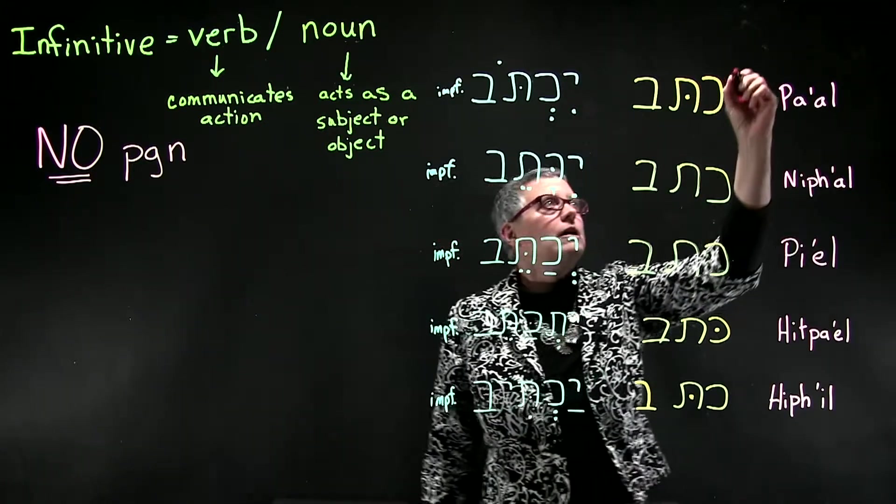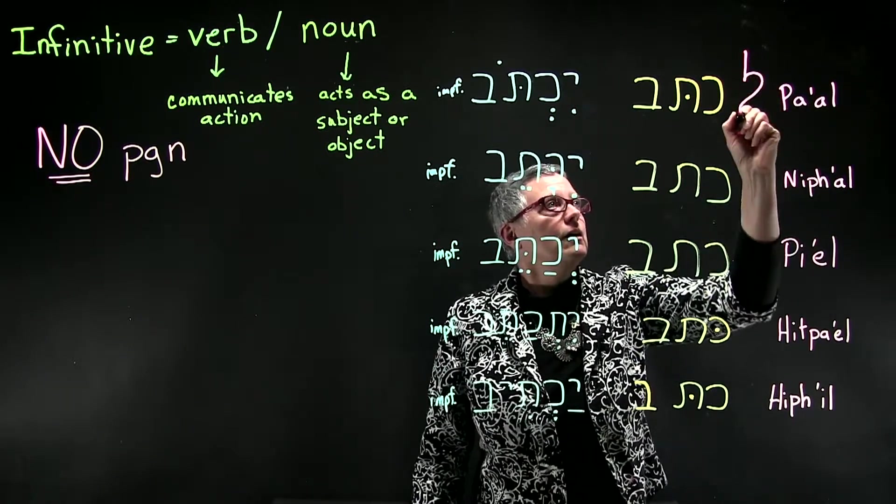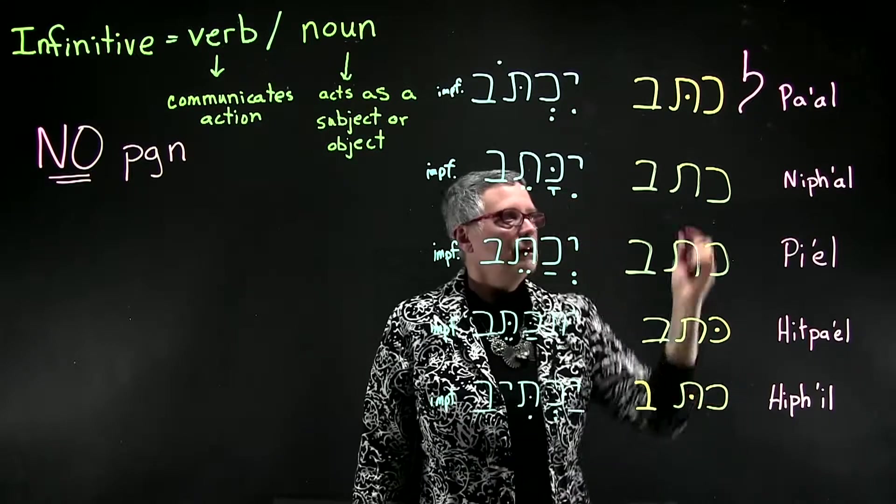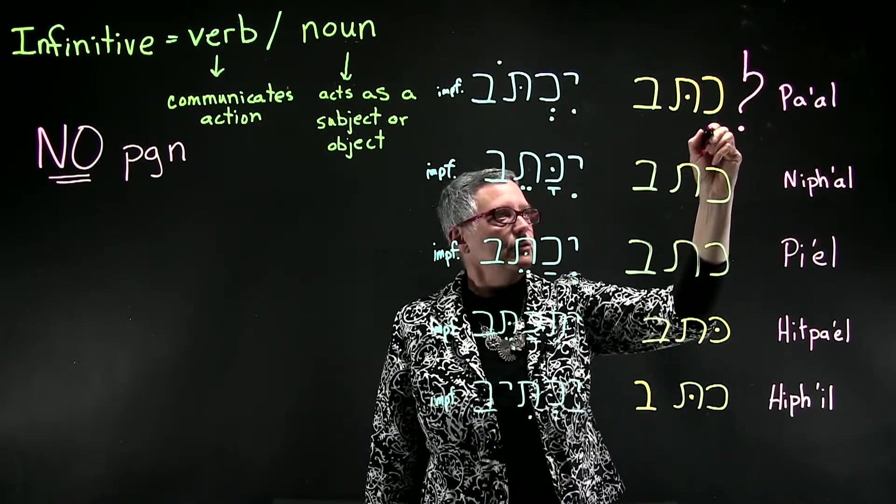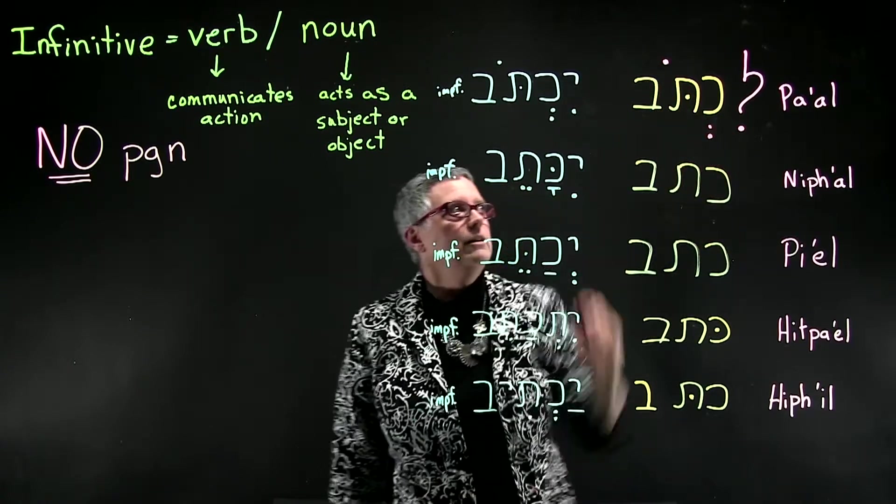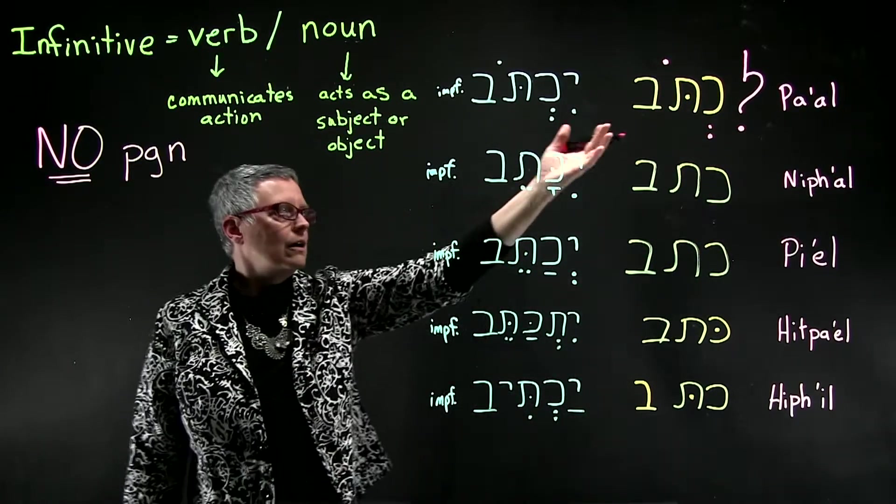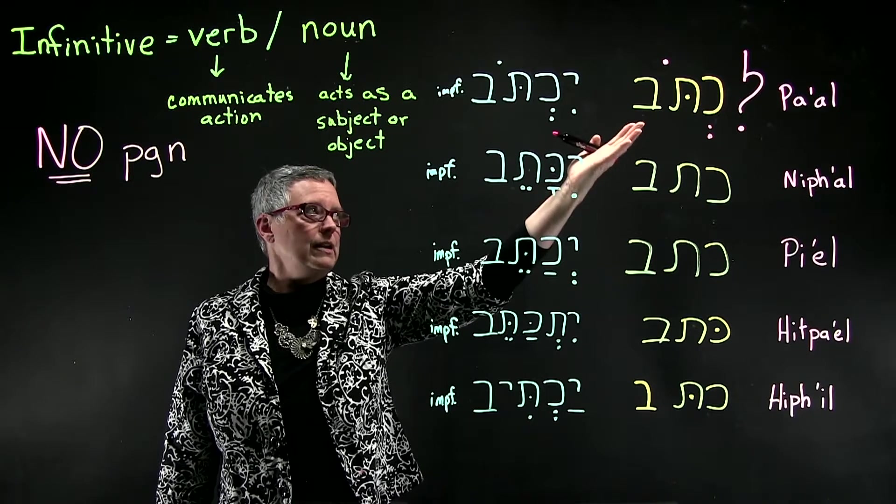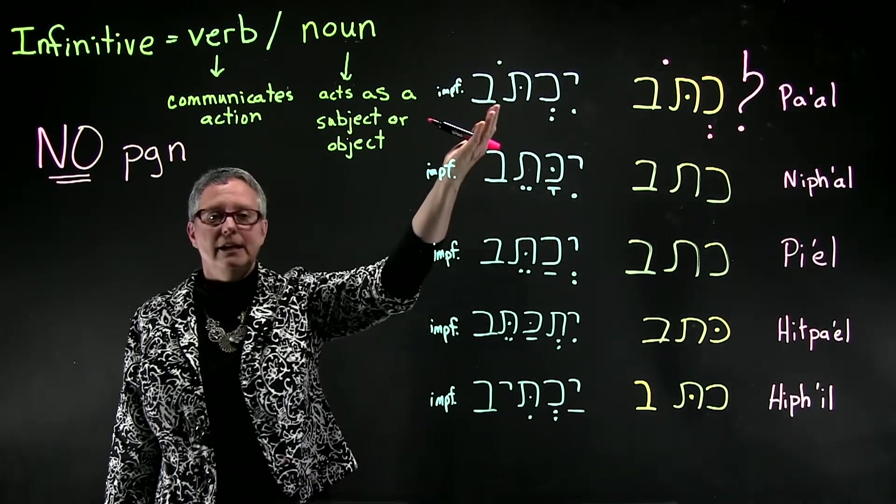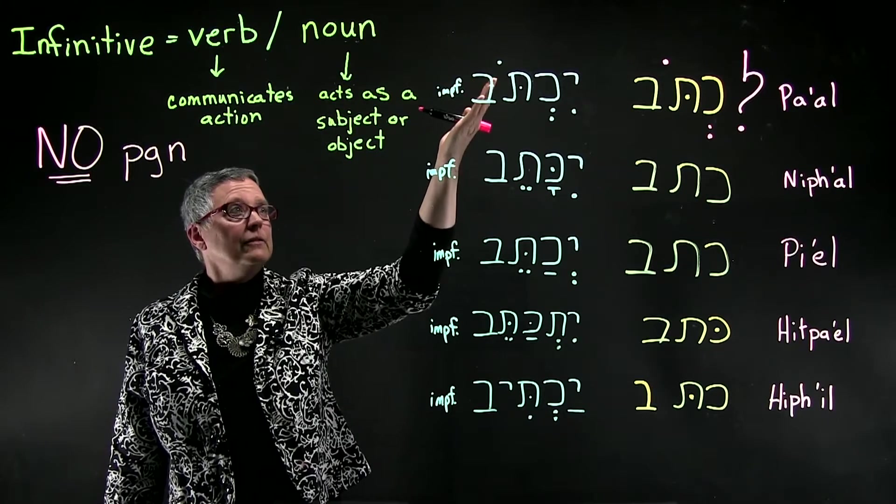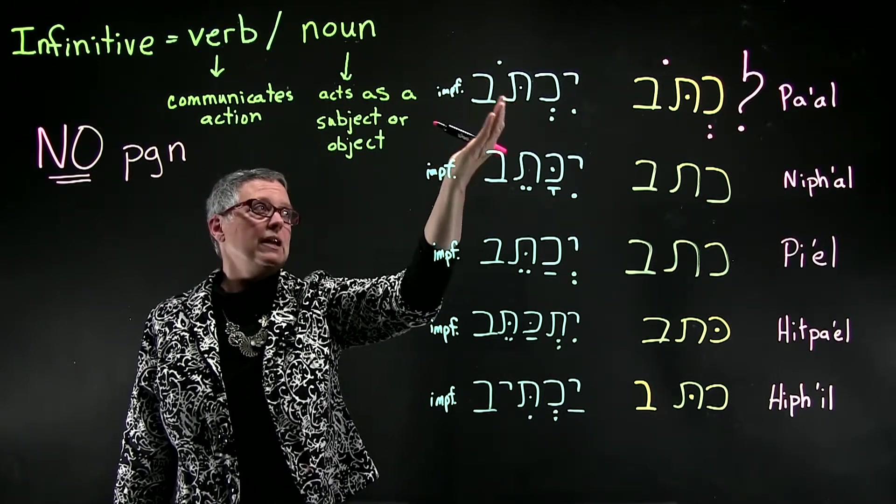So for the pa'al, we add the preposition, and then you'll notice that the form for the infinitive—the pa'al infinitive—has the same pointings as the imperfect pa'al.